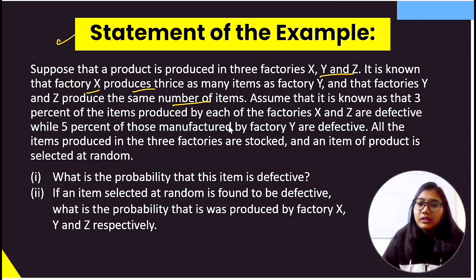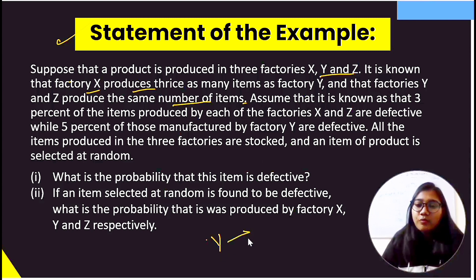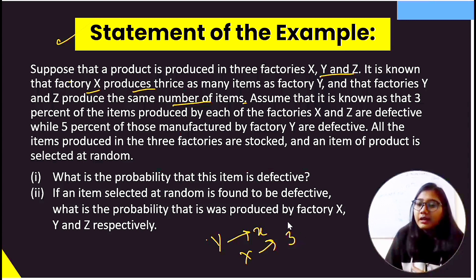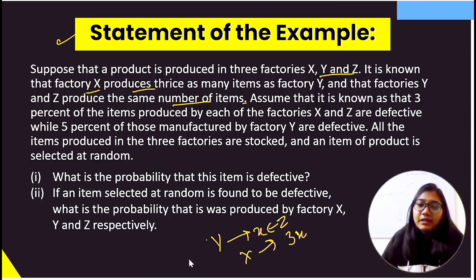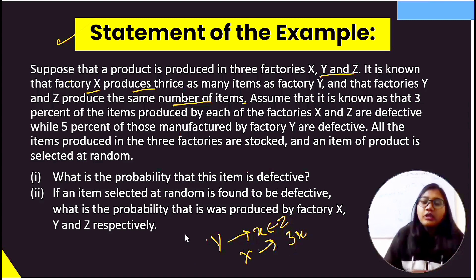If we understand this: suppose Y produces X items, then factory X produces thrice of Y, meaning 3X items. Since Y and Z produce the same number of items, Z also produces X items.